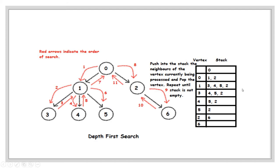If a vertex is found visited in this process, then return to the previous step and start the procedure from there. If returning back to source is not possible, then DFS from the originally selected source is complete and start DFS using an unvisited vertex. Start with S and mark it visited, then visit the next vertex A, then C, then D.